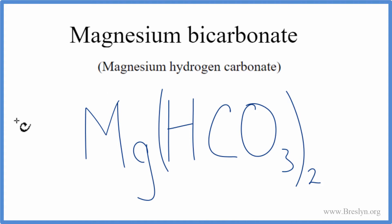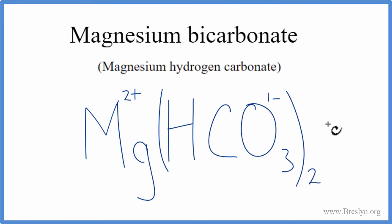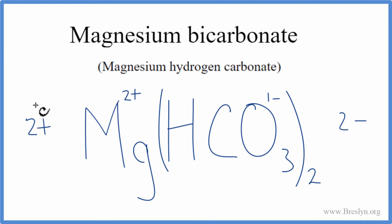Let's check our work to make sure we got that right. Magnesium had a two plus ionic charge. Hydrogen carbonate was one minus. We have two of these hydrogen carbonate ions, and each one is minus one — two times minus one gives us two minus. For magnesium, we have one at two plus, so one times two plus is two plus. Two plus and two minus add up to zero, so the net charge is zero. This is the correct formula for magnesium bicarbonate.